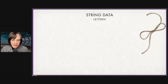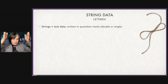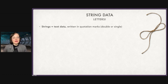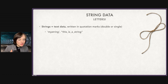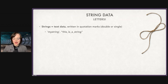String data is basically letters. You can put numbers in it — if you put a number inside quotation marks, it will be stored as a string, which is a great way to confuse yourself while coding. Generally we talk about strings as text, written in quotation marks — double or single. I tend to like single, but they're not always possible to use — we'll talk about that in a moment.